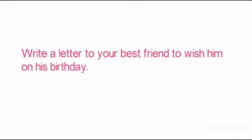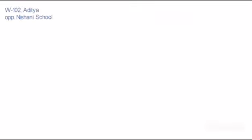Let's use the format and understand how to write a letter to your best friend to wish him on his birthday. The first step is to write the sender's detail — let's say: W102 Aditya, opposite Nishan School, Ahmedabad. The second step is to write the date: 2nd March. The third step is salutation, so let's write 'Dear Bestie'. Now comes the fourth and most important part of the letter — the body.